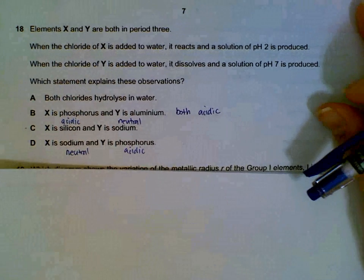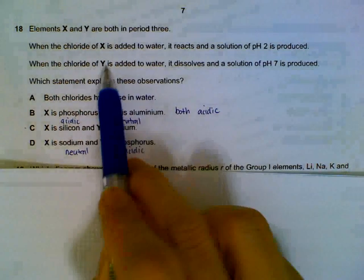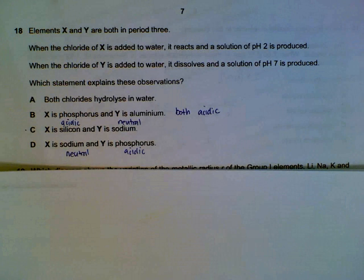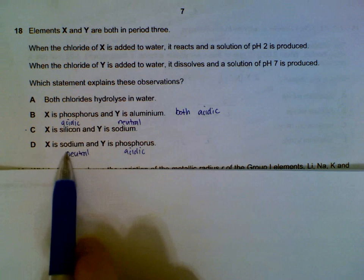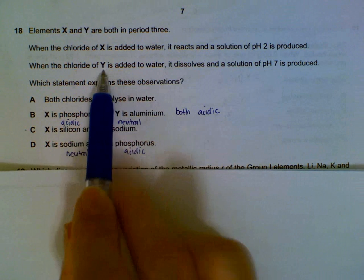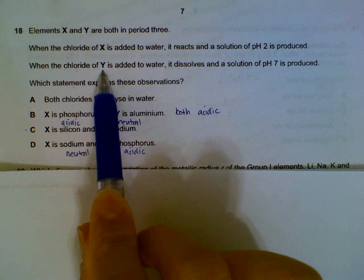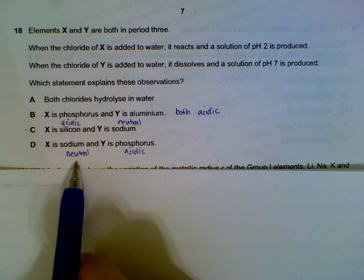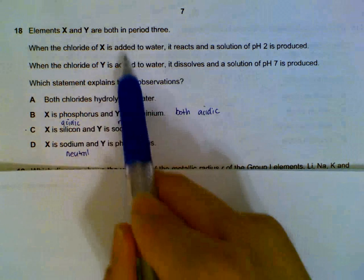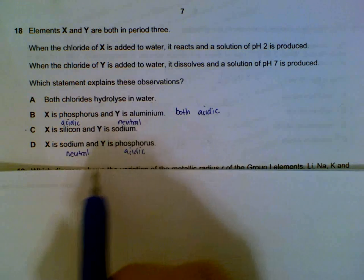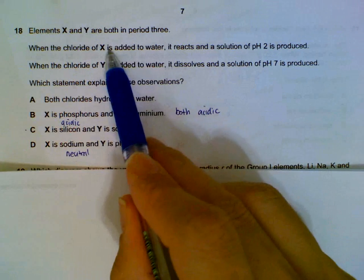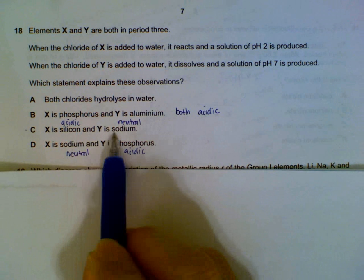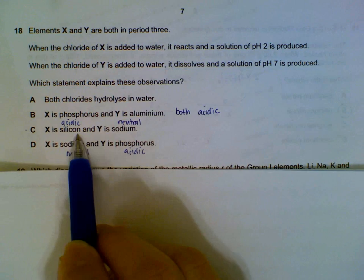X chloride added to water, we get acidic solution. Y chloride, we get neutral solution. What statement will explain these observations? We want Y chloride to be neutral. For neutral chloride, we are looking at sodium chloride. X chloride is acidic, so we are looking for silicon chloride. Y is neutral sodium, X is silicon.